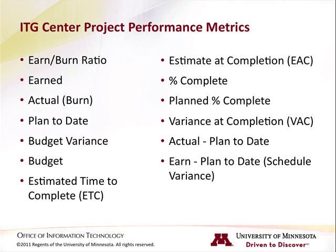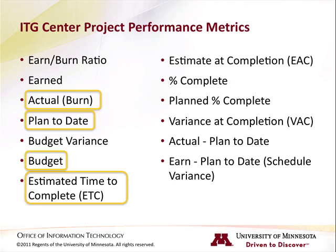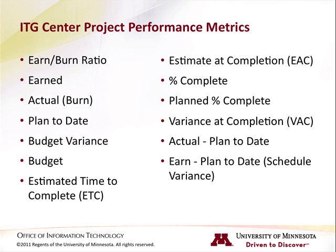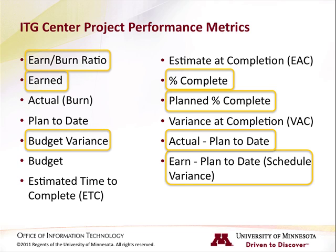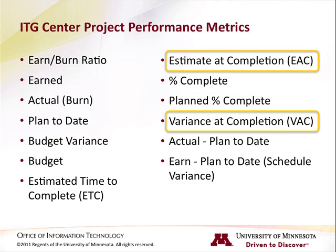We learned that there are four core metrics that are pulled directly from data in ITG Center: Actual, Plan to Date, Budget, and Estimated Time to Complete. The remaining nine metrics are calculated from these core metrics. Seven of these metrics provide additional information about the current state of a project, and two forecast the future state of the project at its conclusion.